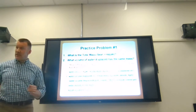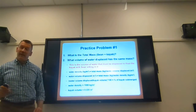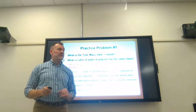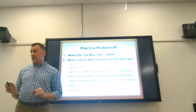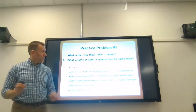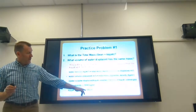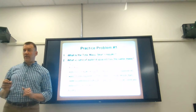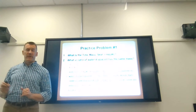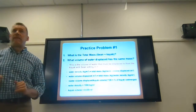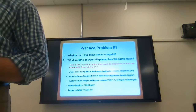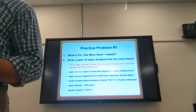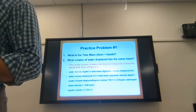Now we have two volumes: the volume of water displaced (0.008 meters cubed) and the kayak volume (0.225 meters cubed). To find the percent of the kayak submerged: 0.008 divided by 0.225, times 100, gives approximately 36 percent. So about 36 percent of the kayak will be submerged with Sean sitting in it. Units cancel correctly — meters cubed over meters cubed.